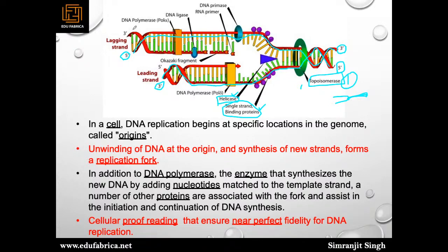The replication fork produces two strands: one is the lagging strand and the other is the leading strand. On the leading strand, DNA polymerase — specifically DNA polymerase lambda — starts producing corresponding nucleotides in the direction of 5 prime to 3 prime end. Always remember that direction: 5 prime to 3 prime. This would be your leading strand.